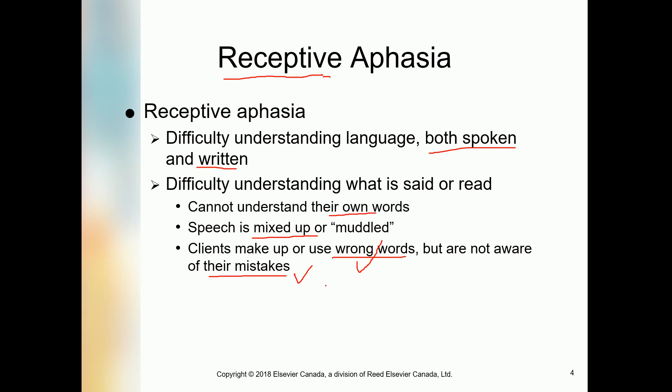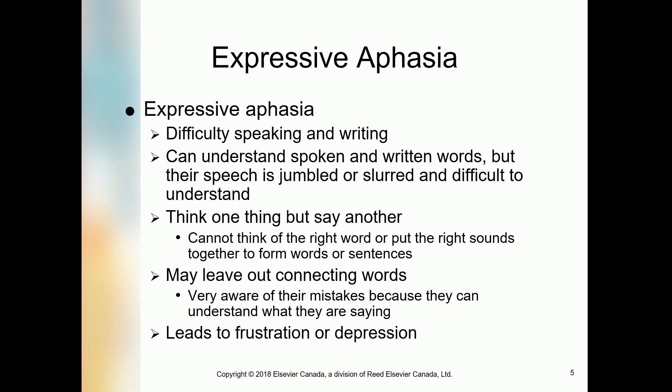In receptive aphasia, people cannot use proper words in the proper situation. For example, a 90-year-old client living in a long-term care home wants to drink water, but the person cannot use the proper word 'water.' The person speaks some mixed type of verbal sounds, and the person becomes dehydrated many times because they cannot express their need. When people have to express and they cannot express, that goes to expressive aphasia.